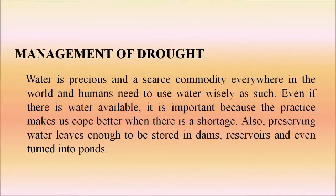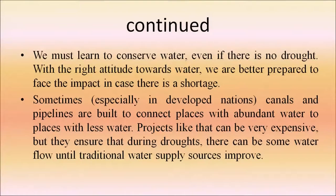Drought causes health problems, increased poverty, reduced quality of life and social unrest leading to migration. Water is precious and scarce, and humans need to use it wisely. Even when water is available, conservation practices help us cope better during shortages. Preserving water ensures enough is stored in dams, reservoirs and ponds. Tunnels and pipelines are sometimes built to connect water-abundant areas to water-scarce areas to ensure some water flow during droughts.